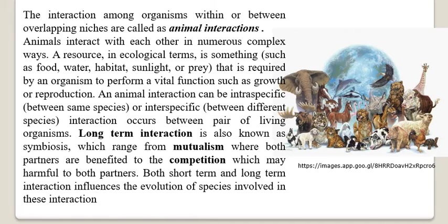Within or between adjacent niches — suppose a particular terrestrial habitat has elephants, tigers, sheep, rabbits, and goats. If there is a small water pond, aquatic animals are also there. Birds living on trees have a different niche, those on the ground have a different habitat, and those in water have yet another habitat — arboreal, terrestrial, and aquatic.